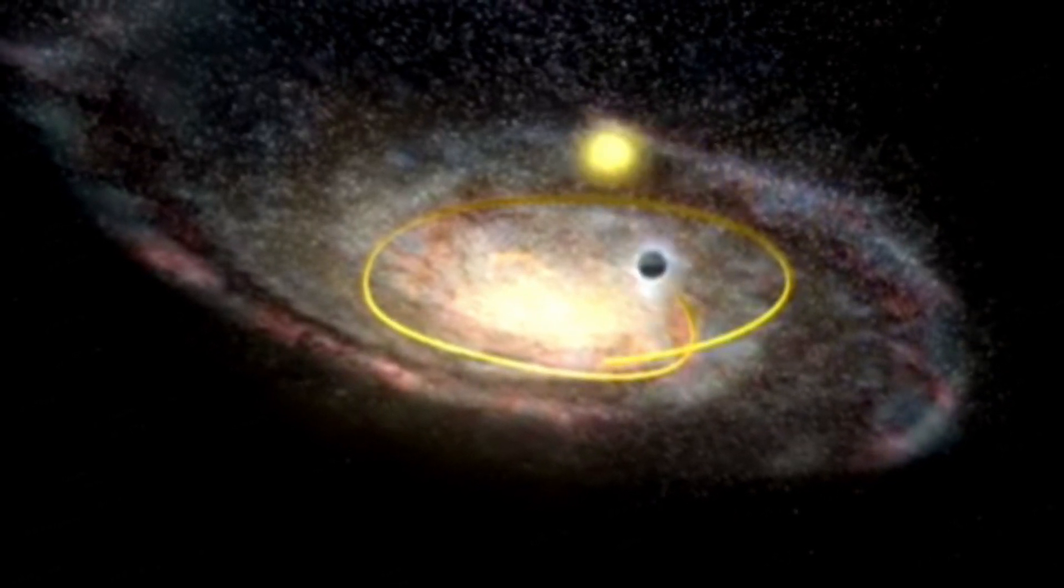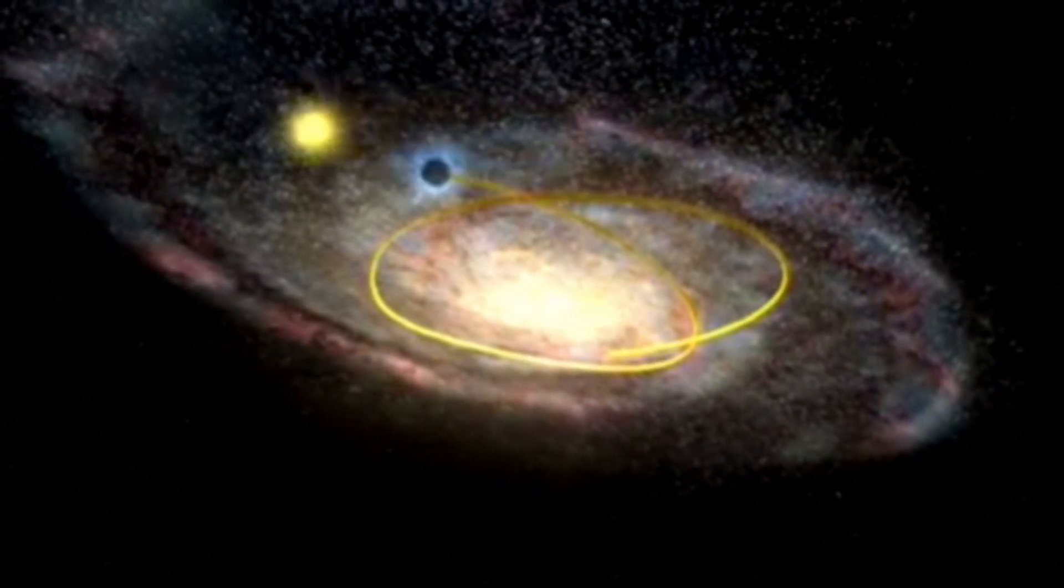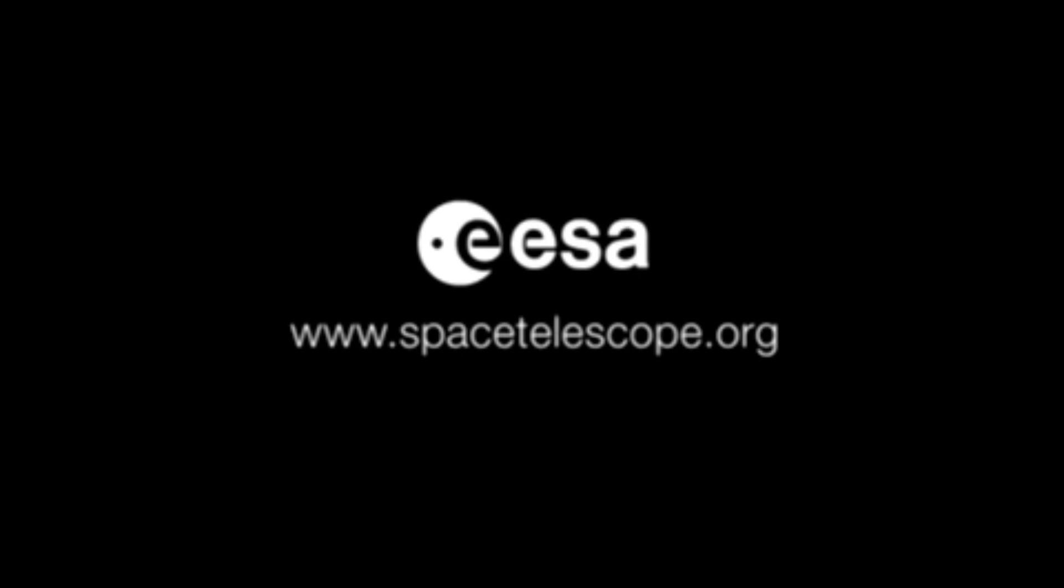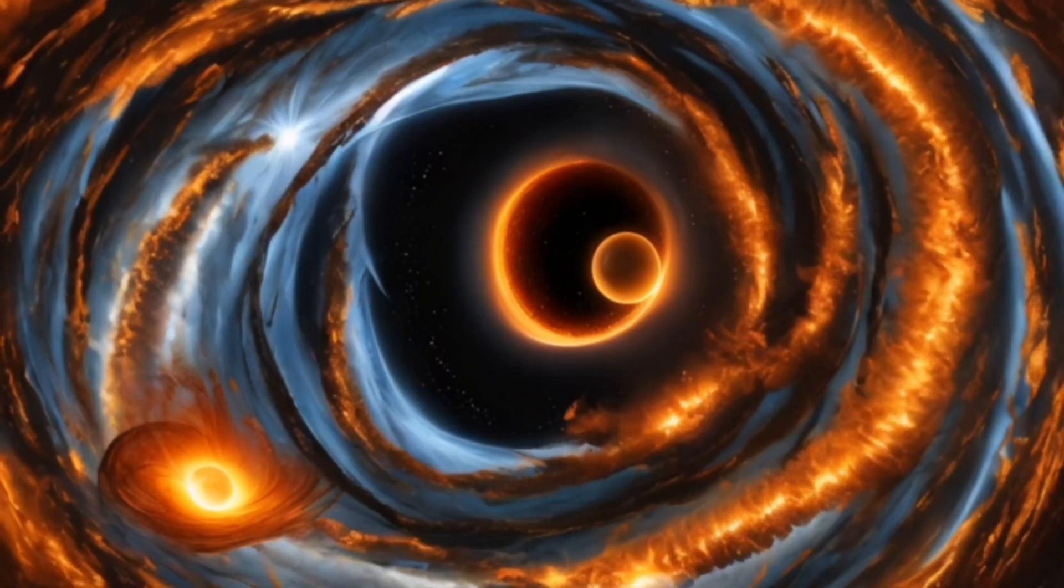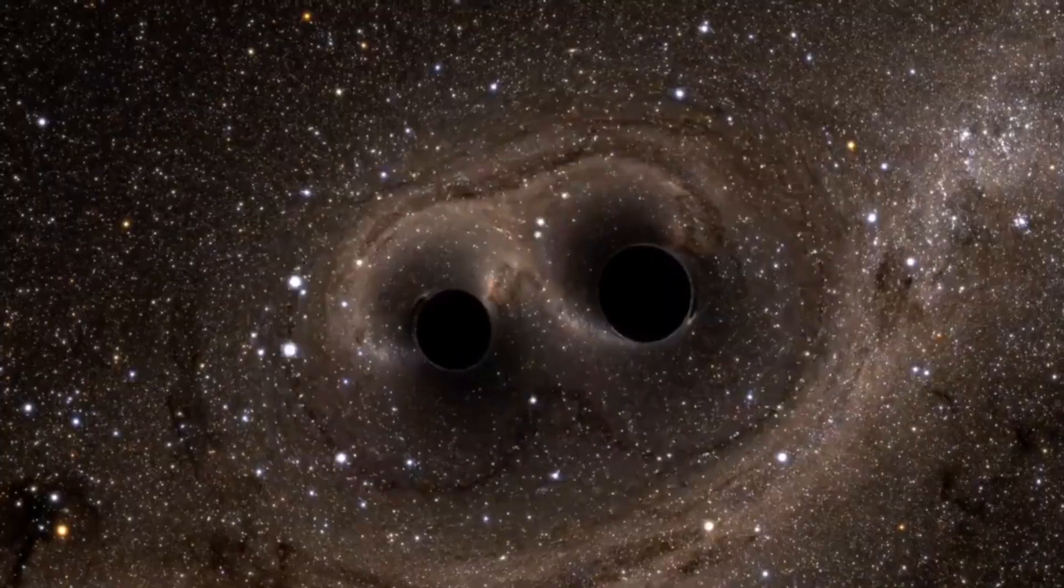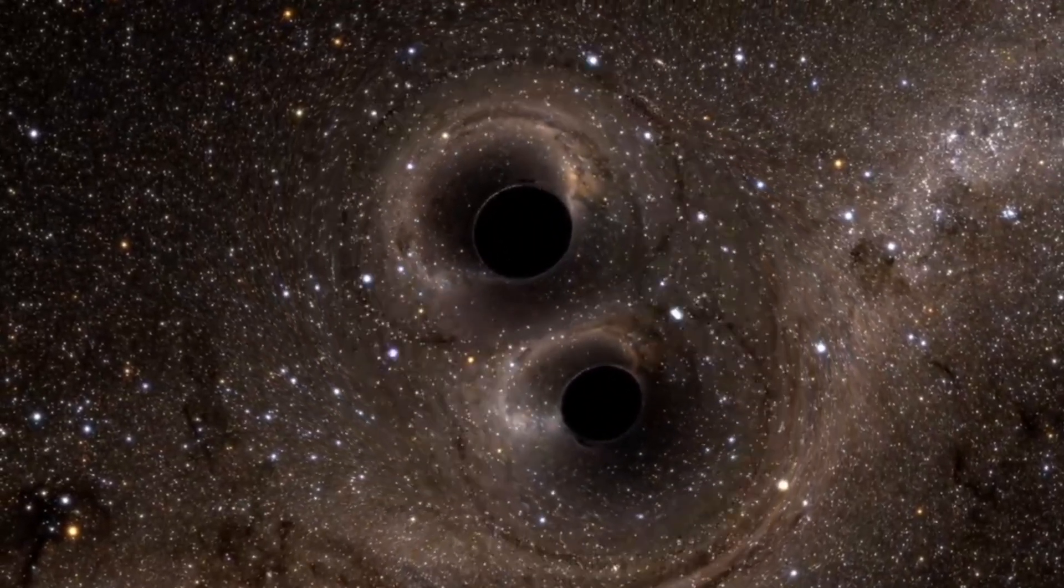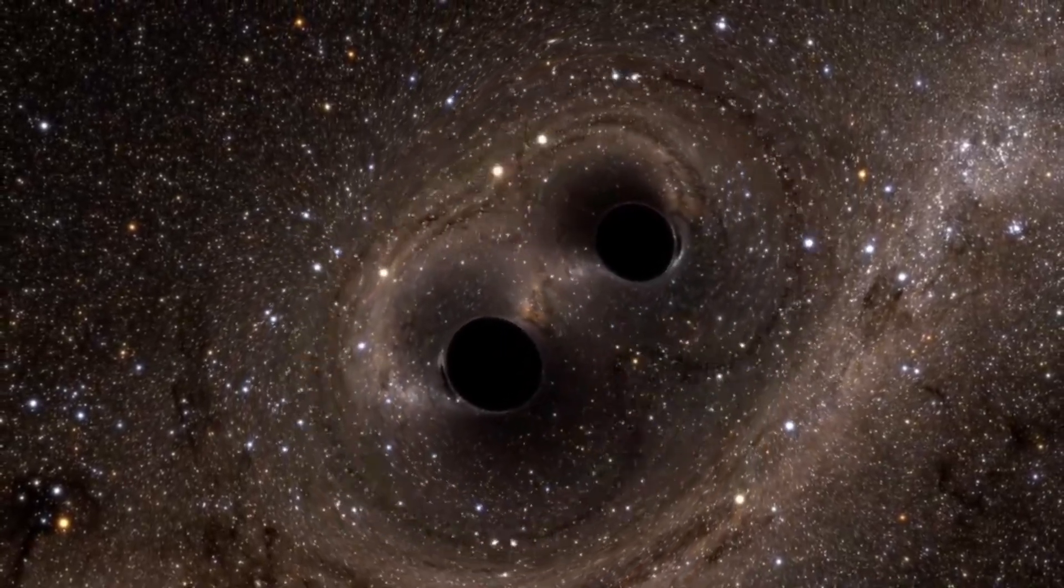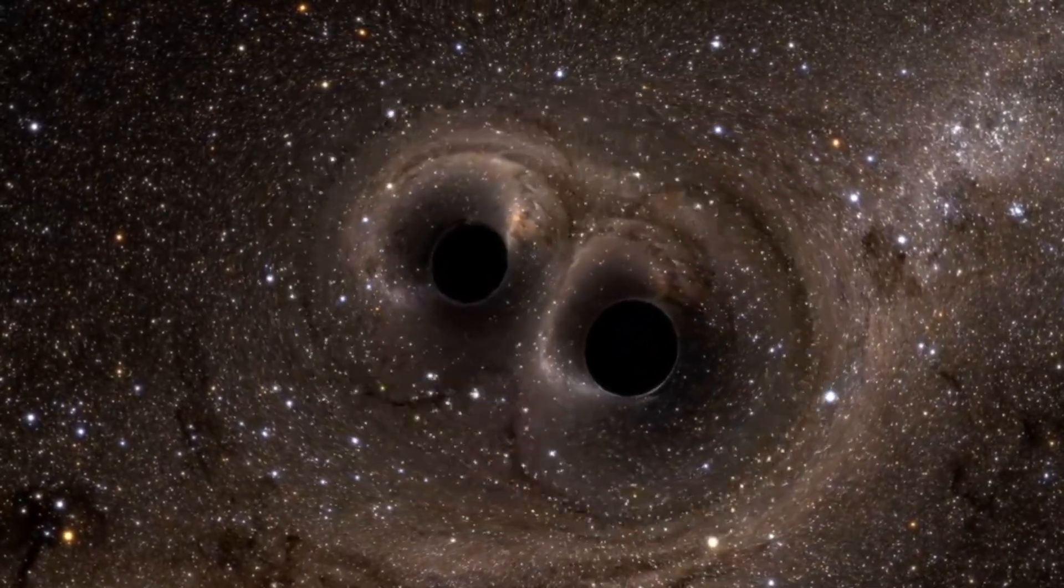In one corner, we have the sun, the star that lights up our solar system and provides the energy essential for life on Earth. And in the other corner, we have the reigning champion of cosmic gravity, the largest black hole known to humanity. Let the battle of celestial proportions begin.